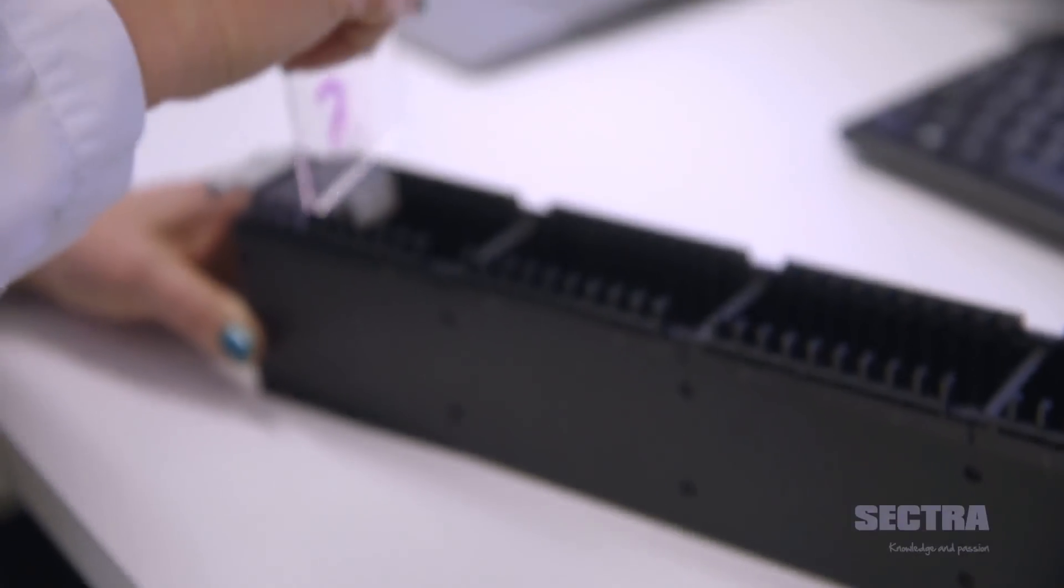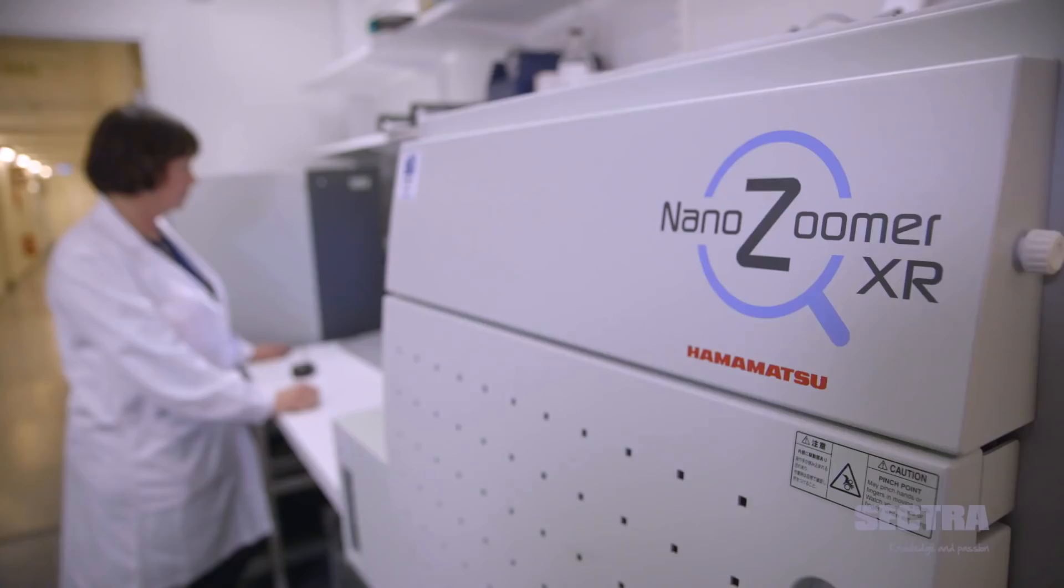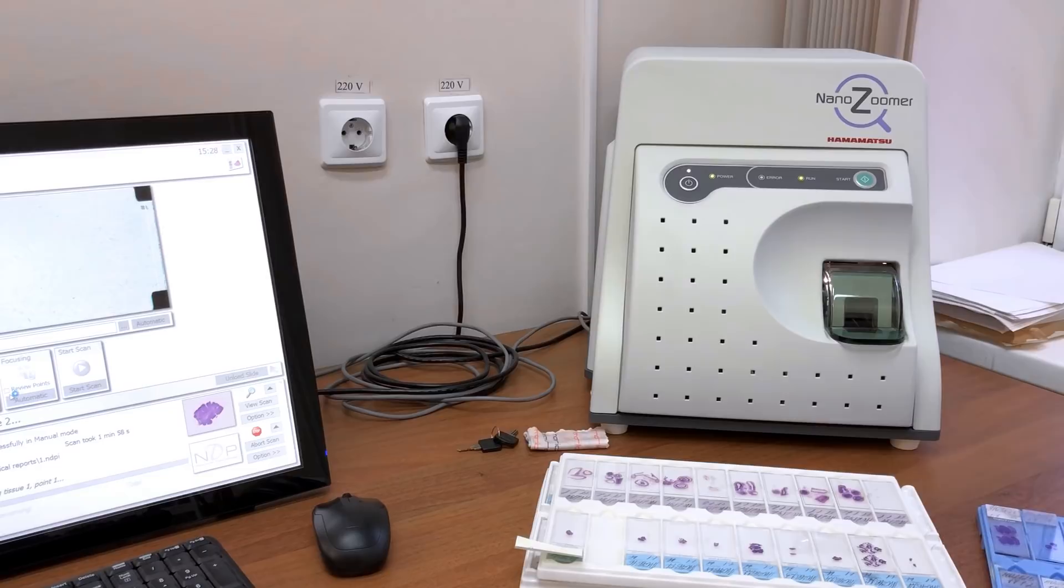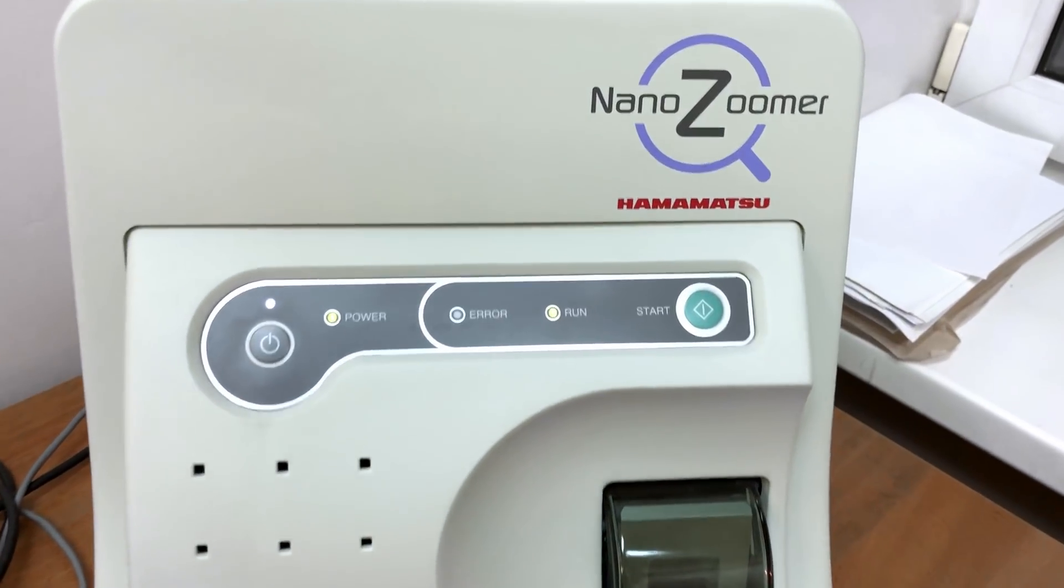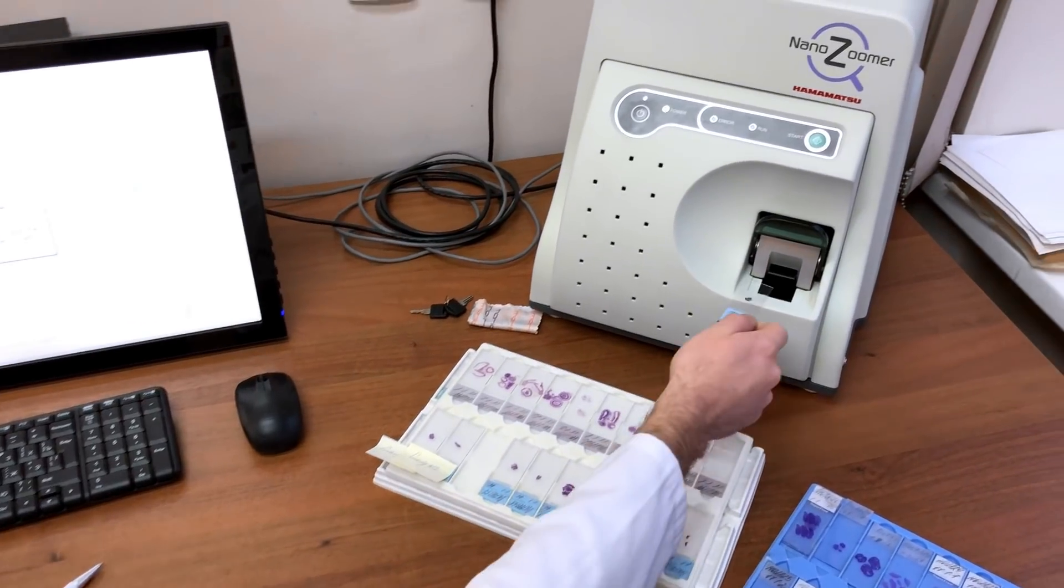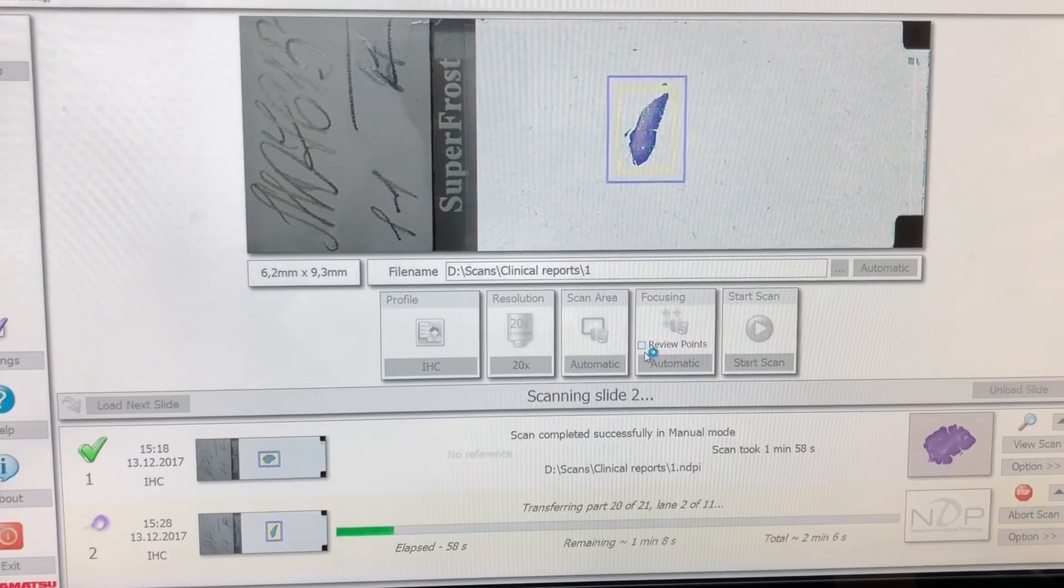For example, slide scanner nanozomer SQ developed by Hamamatsu company. Simple microscope with digital camera wouldn't work in case we're talking about images with high quality and resolution. Slide scanner is a special type of light optical microscope, performing the processing of slides by obtaining digital photos with big resolution and subsequently saving them in the form of interactive images.